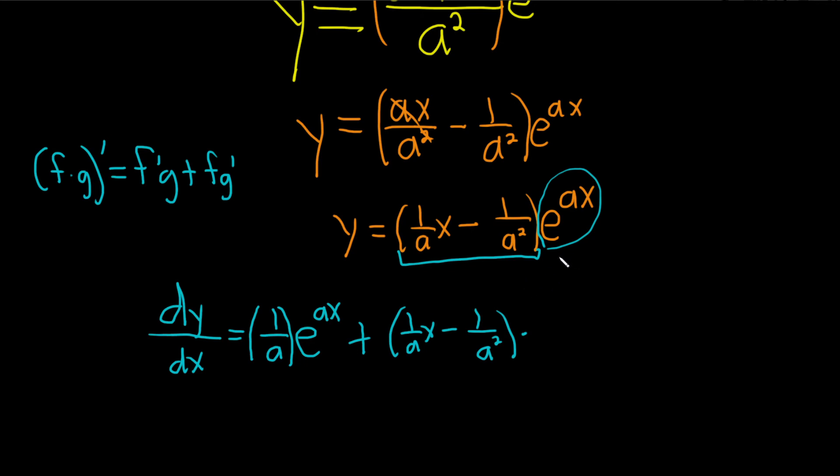Well, the derivative of e to the x is e to the x. So when you take the derivative of e to the a x, you just get e to the a x times the derivative of the inside function, which is just a. Alright.